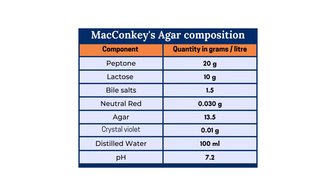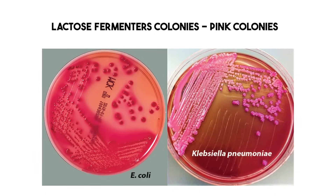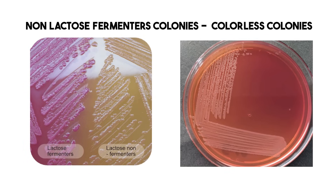Take MacConkey agar — it has lactose and a pH indicator dye. Enterobacteriaceae like E. coli, Enterobacter, and Klebsiella can ferment lactose. When they do, they produce acid, which changes the pH indicator in the agar, making their colonies turn pink or red. But bacteria like Salmonella, Shigella, and Proteus can't ferment lactose, so they grow but their colonies stay colorless or pale yellow. It's a really clear visual split — super helpful for looking at gut bacteria or stool samples.